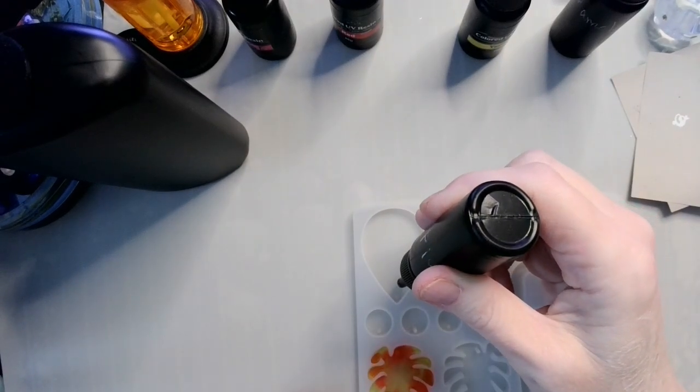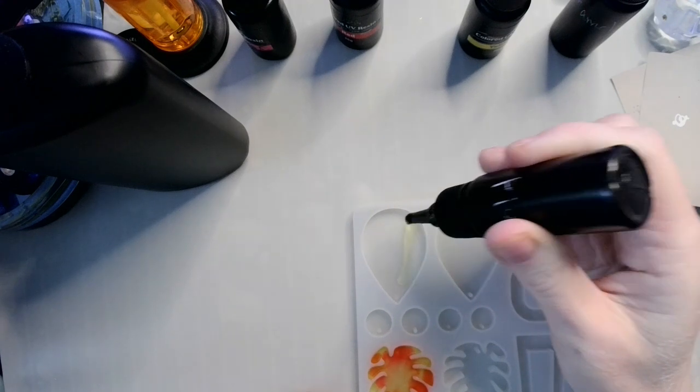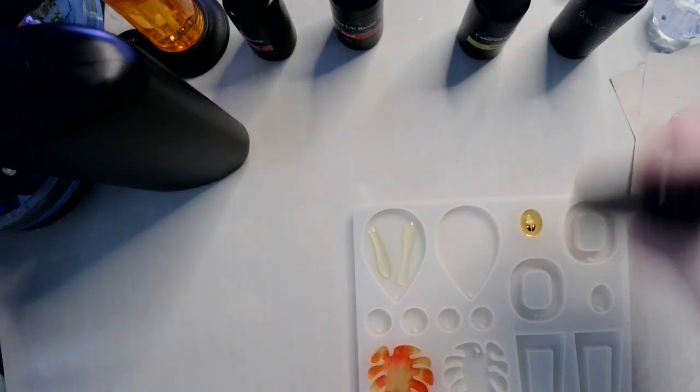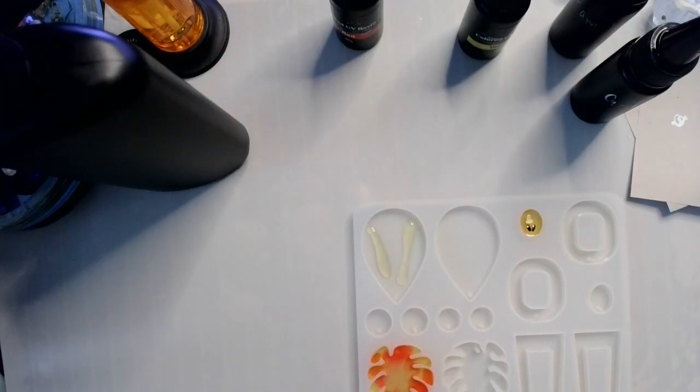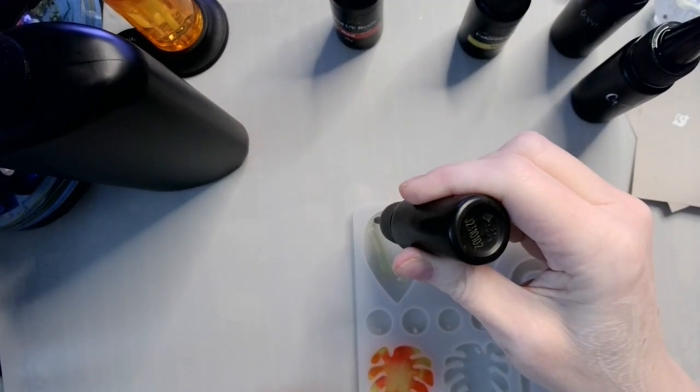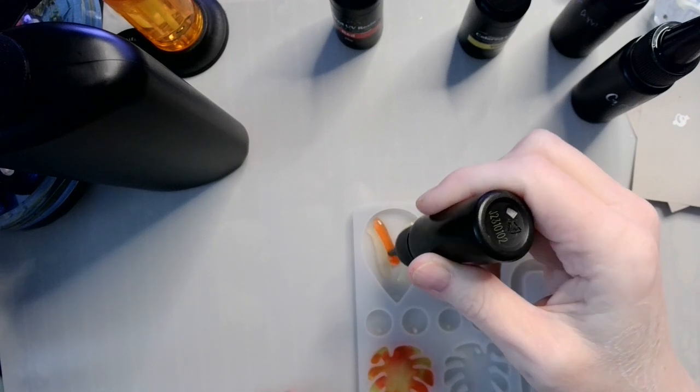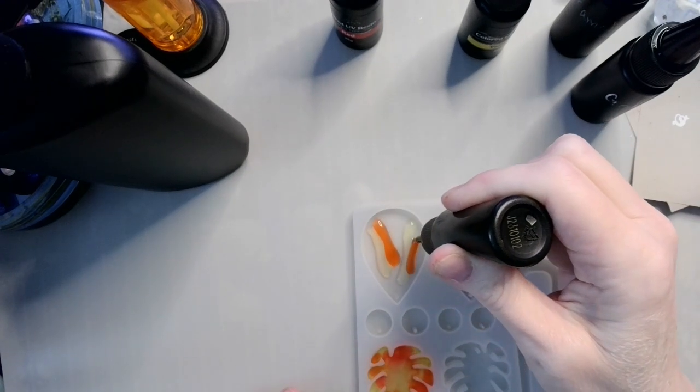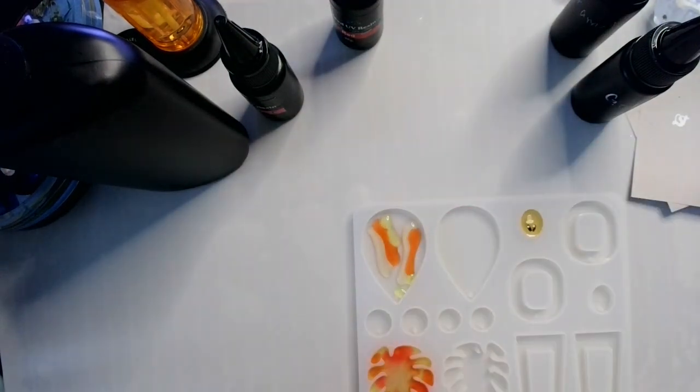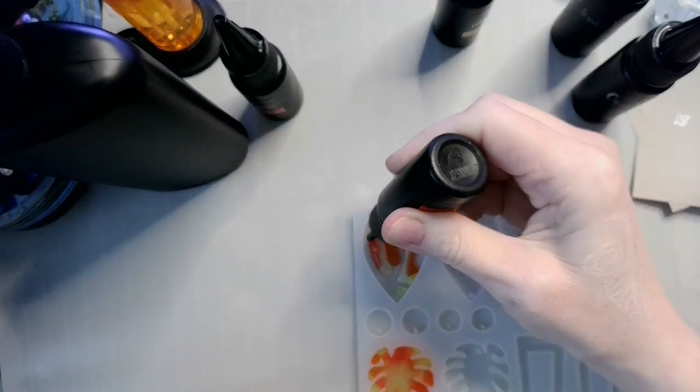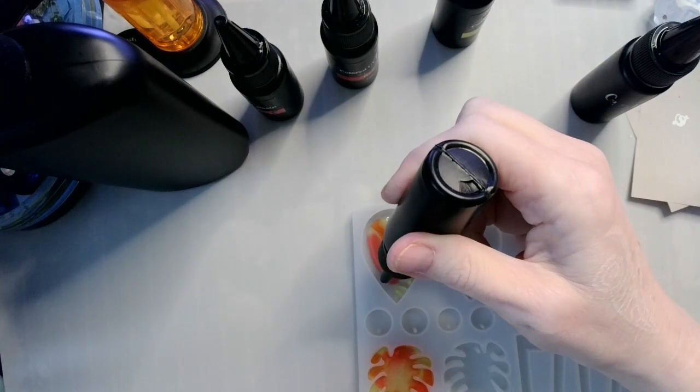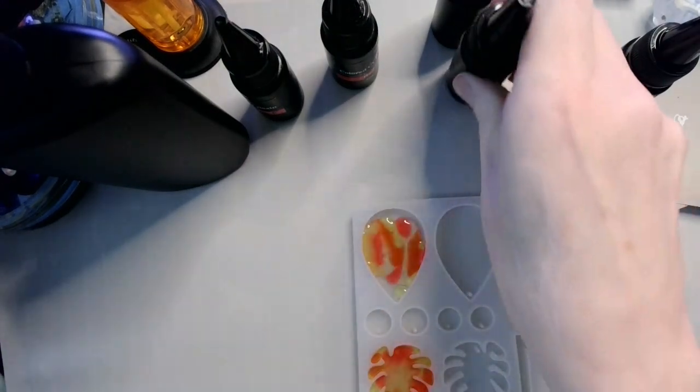So here's my gold UV resin that I made. And if you're interested to know how I make different colored UV resins, I do have videos in my resin projects playlist that you are welcome to peruse at your leisure. So all I'm doing right here is just making stripes.